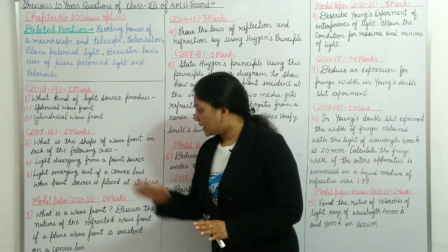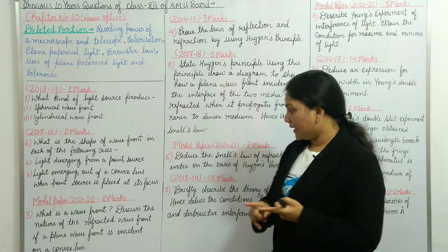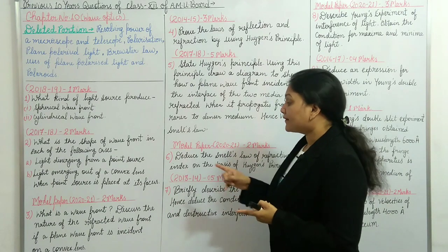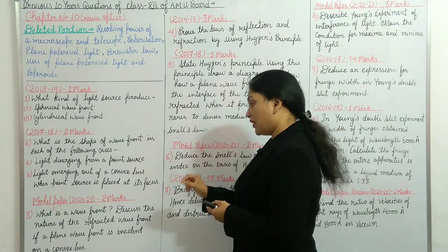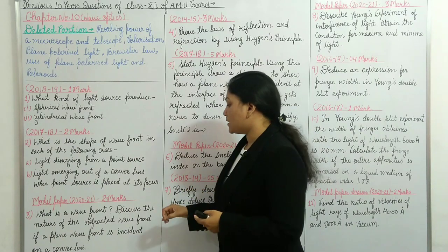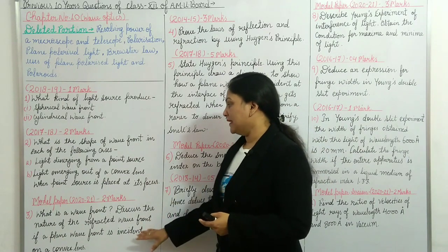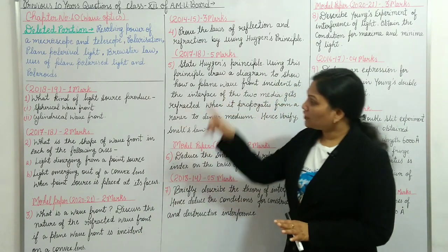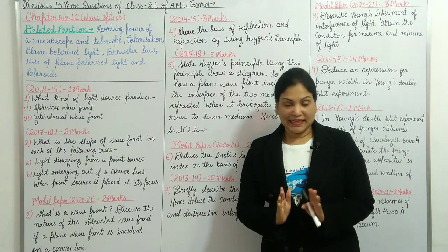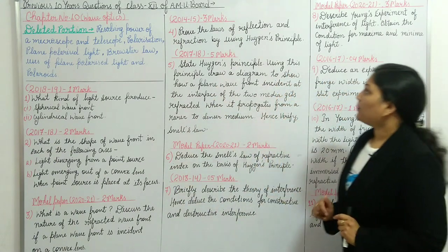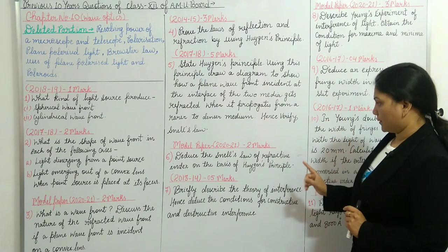Question number three asks: what is a wavefront? Discuss the nature of the refracted wavefront if a plane wavefront is incident on a convex lens. So all three questions — one, two, and three — are interconnected and cover the same topic.